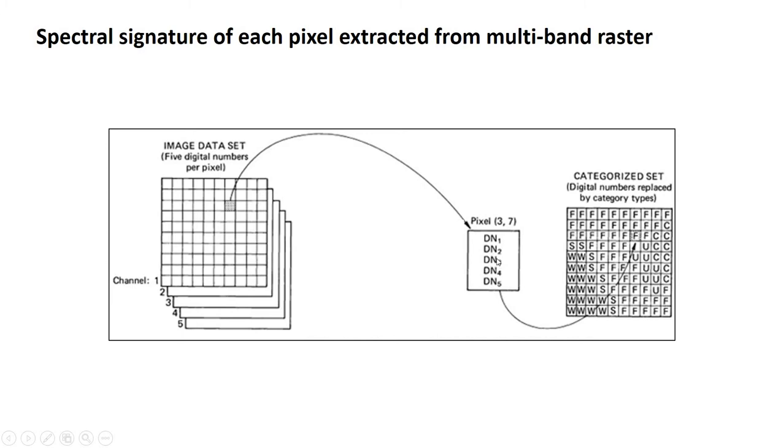And that is basically the spectral signature of the pixel. It's kind of like a unique barcode that makes it either similar or different to other pixels. And then, based on those similarities and differences, we'll group it into a class for our map.